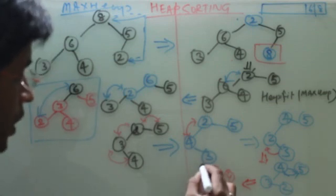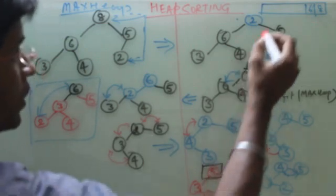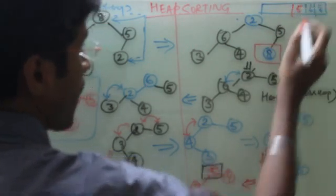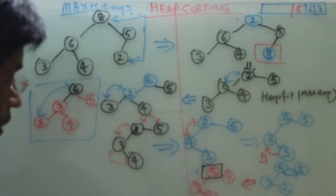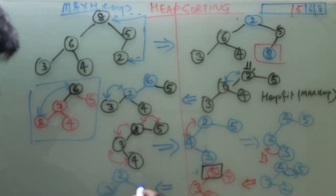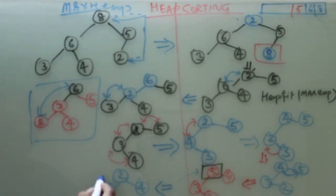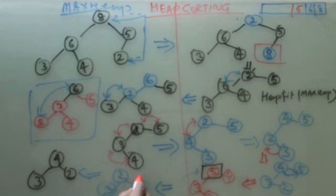Now at this point we have again a maxheap. We will take this 5 and swap it with the leaf. So what my tree will become is 2, 4, and 3. Now we will create again a maxheap of this. So it will become 4, 2, and 3 because we are swapping these two parts.